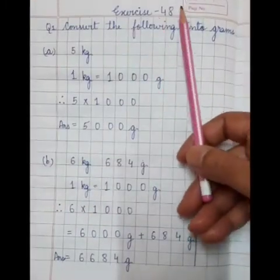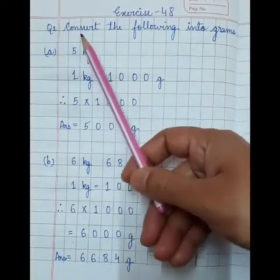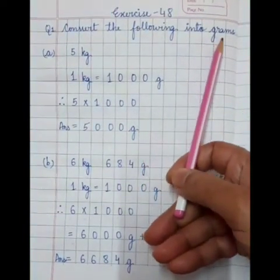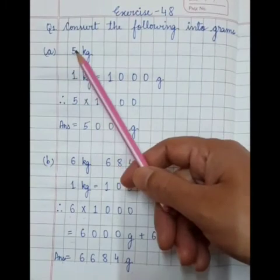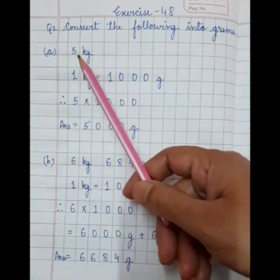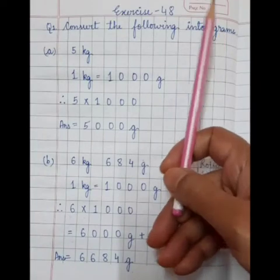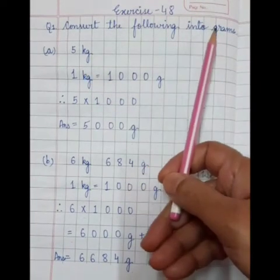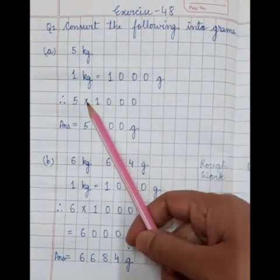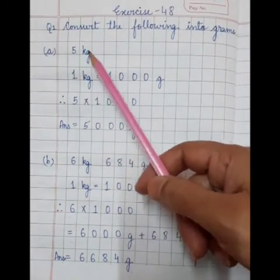Exercise 48, Question 1: Convert the following into gram. A part: 5 kg. Children, we have to change 5 kg into gram. And whenever we change kg into gram, we always multiply. We will do this sum step-wise.